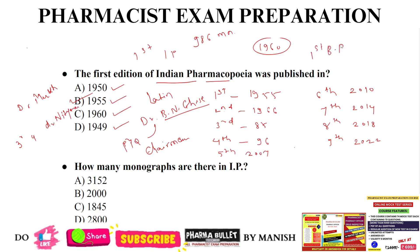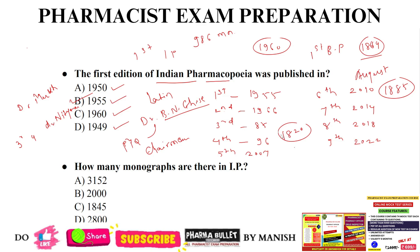The first British Pharmacopeia was published in 1864 — this is also a previous year question. British Pharmacopeia is published every year in the month of August. From which year was British Pharmacopeia made official in India? 1885. Then in which year was the first USP published? 1820. And the first Japanese Pharmacopeia was published in 1890. These are all previous year questions.